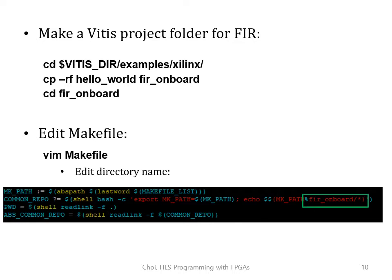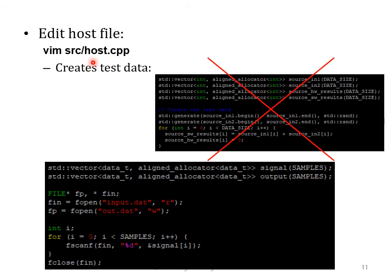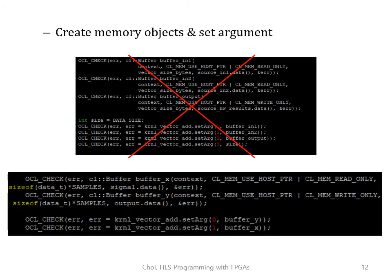Go to the new directory and edit the makefile. Look for 'common_repo' and edit the directory name to 'FIR_onboard', then close the makefile. Now let's edit the host file — open host.cpp. Go to the section that creates test data for vector add, delete that routine, and instead copy and paste the code from our test bench file fir_test.cpp that reads the test data for FIR. Then let's make memory objects or buffers, which will be allocated in device memory. For vector add we needed two input buffers and one output buffer, but for FIR we need one input buffer and one output buffer, so delete the vector add memory objects and add the FIR ones.